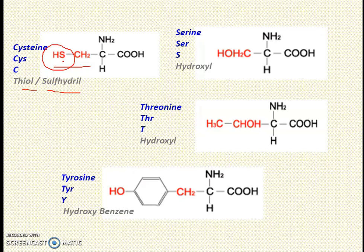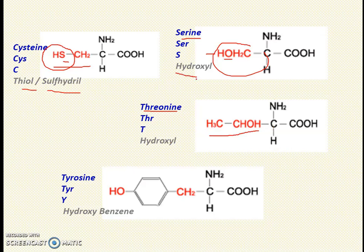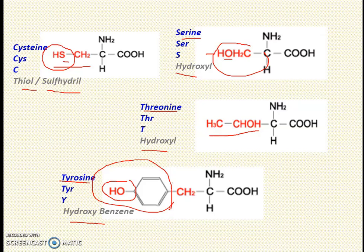Methionine is also sulfur-containing but its sulfur is in a thioether group, whereas cysteine's sulfur is in a thiol group. To write serine, just replace SH with OH: CH2OH–CH–NH2–COOH. Add a methyl group to serine and it becomes threonine: CH3–CHOH–CH–NH2–COOH. Tyrosine, as explained for phenylalanine, just adds a hydroxyl group to the benzene ring — it contains a hydroxybenzene radical. Serine, threonine, and tyrosine all contain hydroxyl groups.